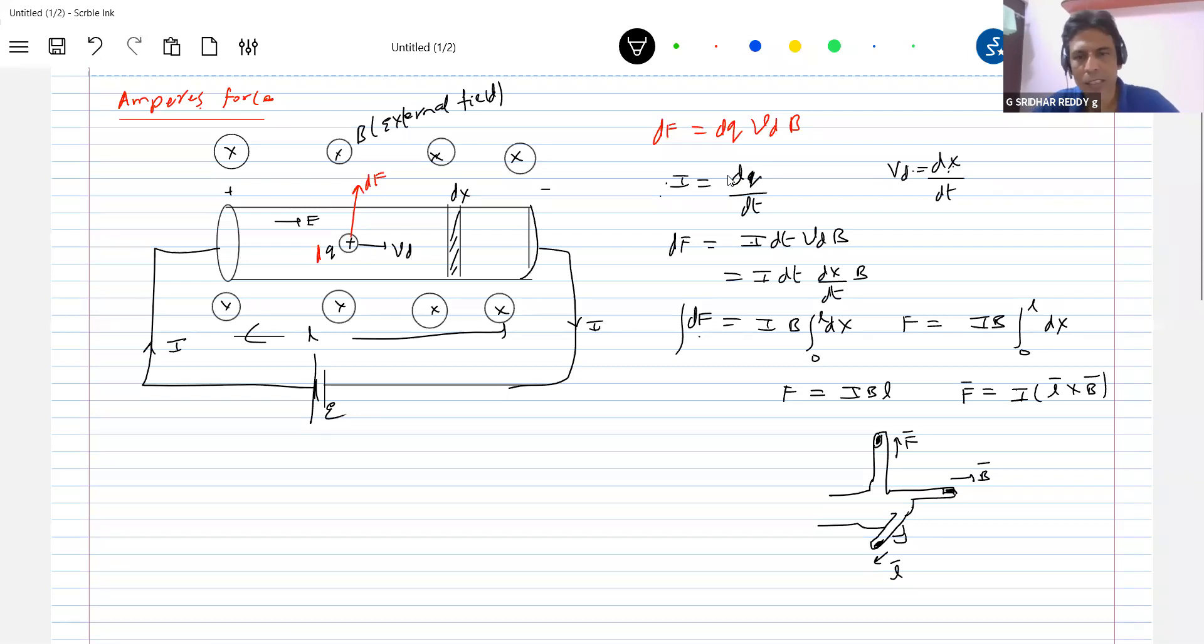Okay, this is the basic idea. So what is the F? What is F on what I brought it? The conductor made up of several charges. So like this, the resultant of the force experienced, the resultant force experienced by all the charges is what that Ampere's force I'll call it. And that will act on the conductor.